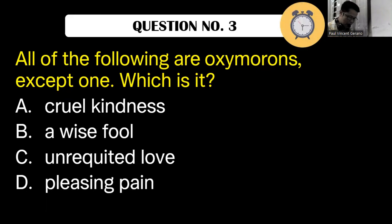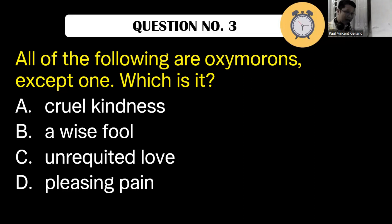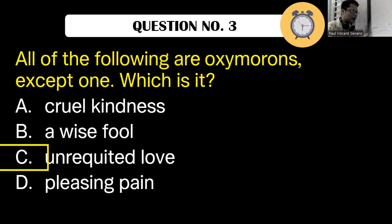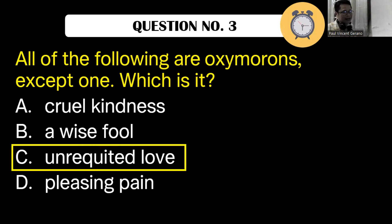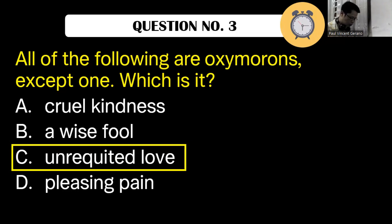Jennifer answered pleasing pain, but James and Anton answered unrequited love. The correct answer is letter C, unrequited love. All of the following are oxymorons except unrequited love.